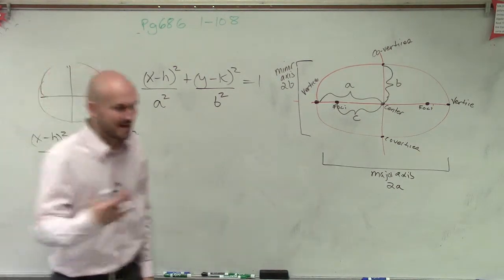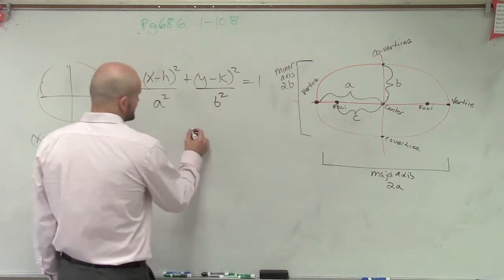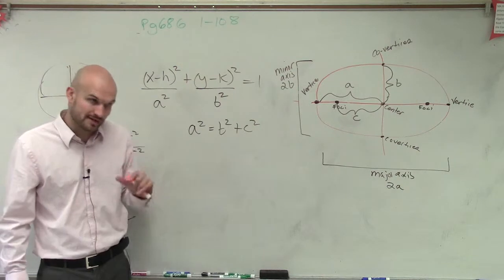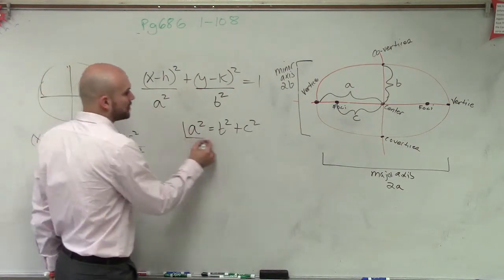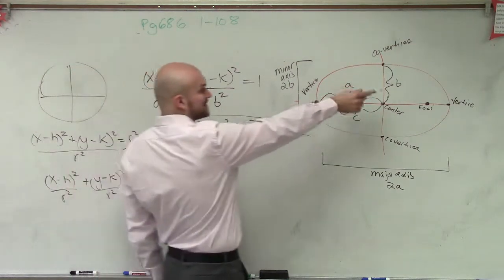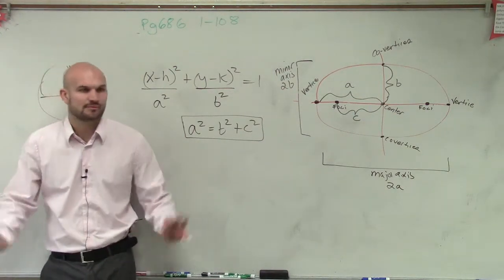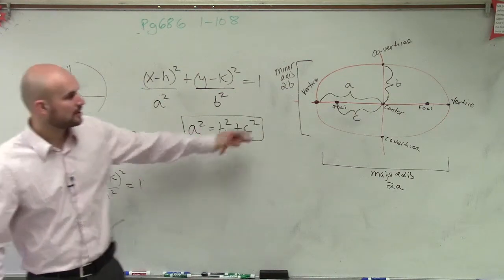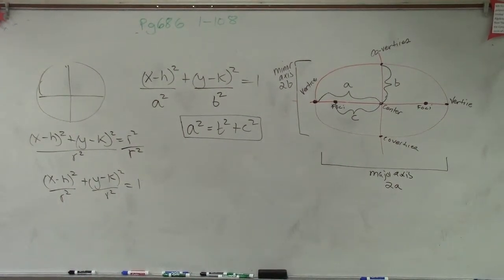The last thing to cover is how a, b, and c relate to each other. The relationship is a² = b² + c² — kind of like the Pythagorean theorem. I won't go into a full derivation here, but you need to know this formula. So to summarize: know the equation for a horizontal ellipse, the relationship a² = b² + c², and all the important parts. A student asked why we use 2a and 2b for axes — the answer is simply that a and c are related by that formula.